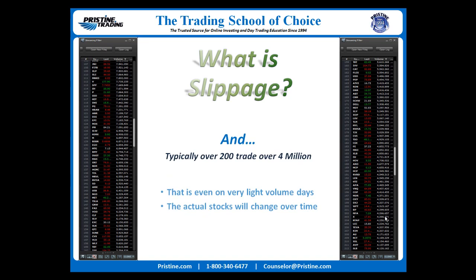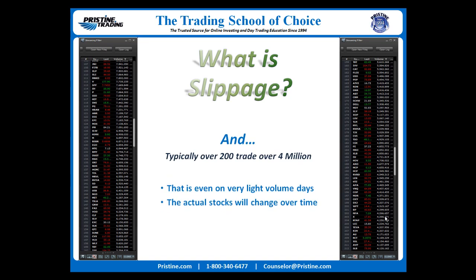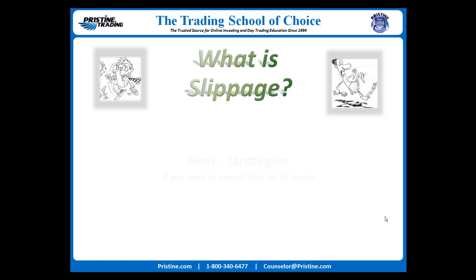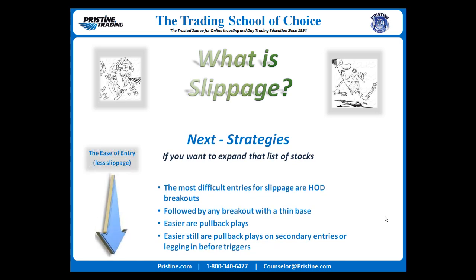Even on a slow day, there are generally 200 stocks that trade at least 4 million shares. The actual stocks may change week to week as the high volume stocks are sometimes changing. The strategies you trade will greatly affect the slippage you have. Slippage will be most difficult when trading long consolidations that are breaking out at the high of the day, and will be even more difficult if it's a very thin base.